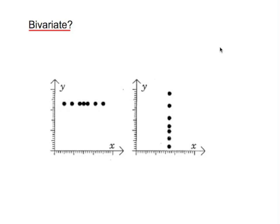We need to be a little bit careful when drawing conclusions about bivariate data. Looking at these two examples here, although the points plotted form a straight line, neither of these is bivariate.